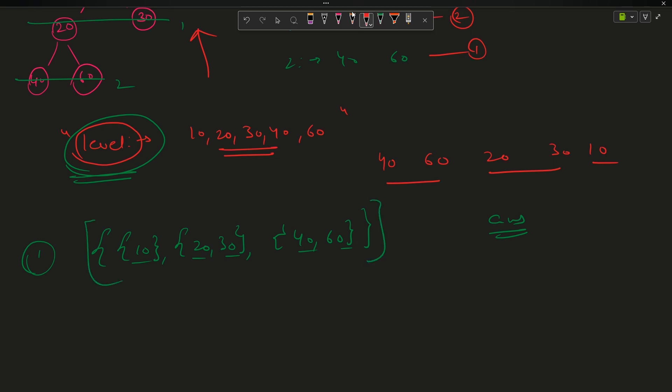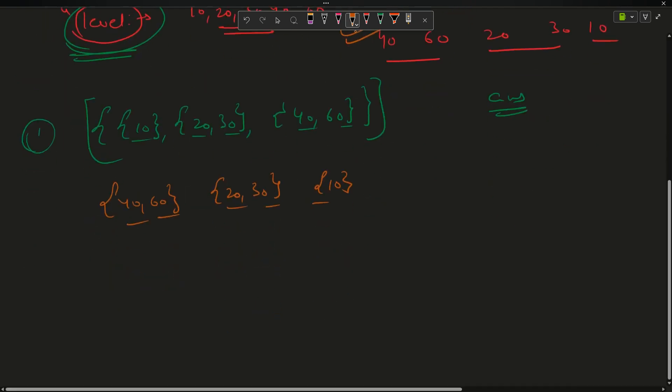But now I can say that reverse this array. If I will reverse this array this will actually become 40, 60, 20, 30, 10. Now if I will push all the elements inside an answer then my answer will exactly look like this. The time complexity of this will remain same, there is no change in that. But can I move to an optimized approach? Yes, I can move to the optimized approach.